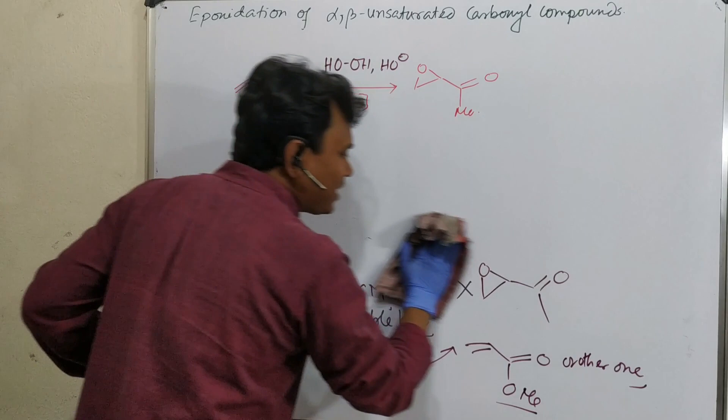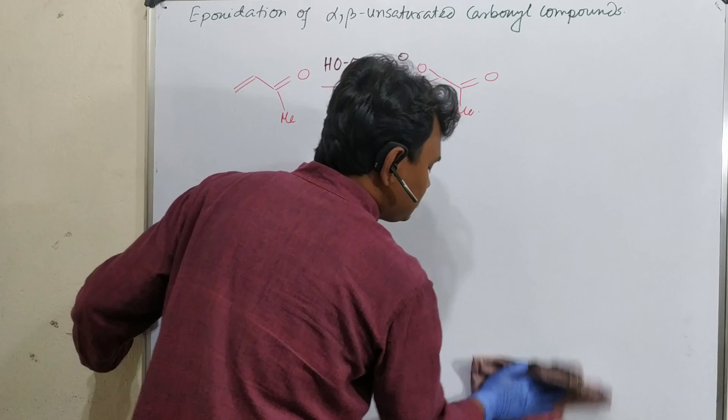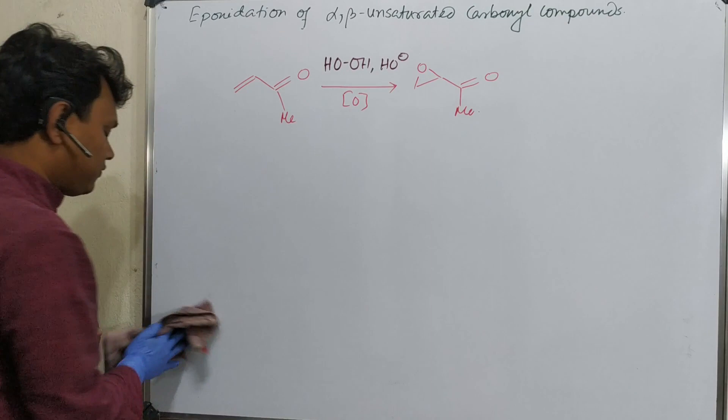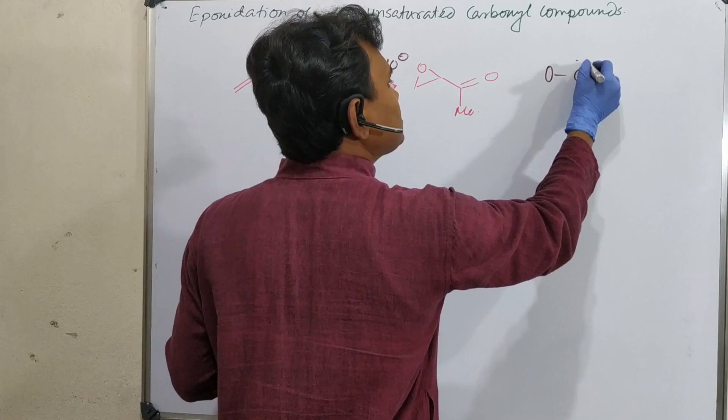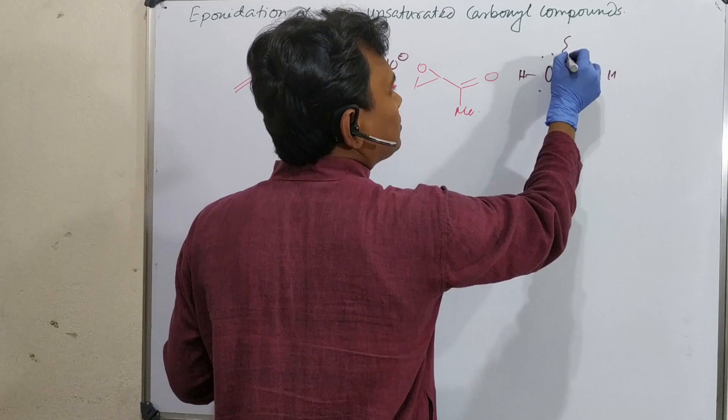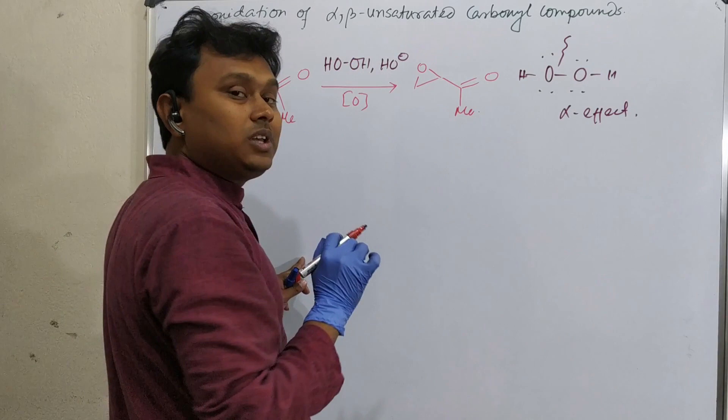Because you know the hydrogen peroxide - if you compare hydrogen peroxide versus hydroxide, the hydrogen peroxide is more nucleophilic but less basic. Because of the alpha effect. Alpha effect means the lone pair-lone pair repulsion.